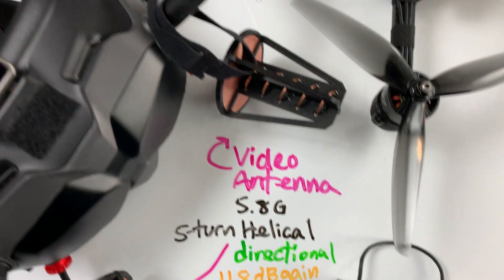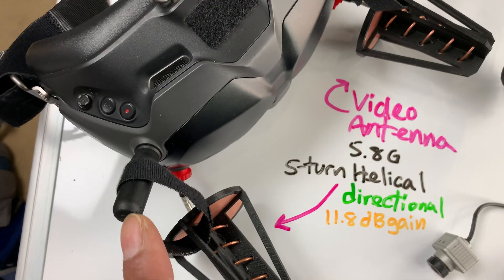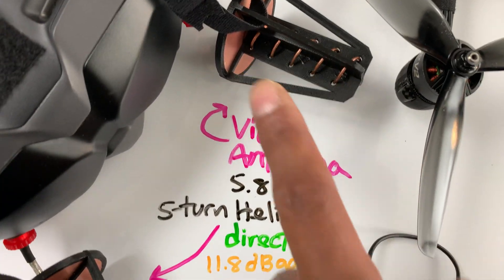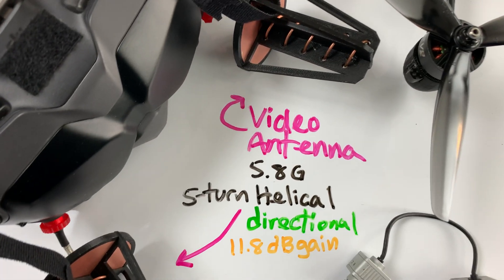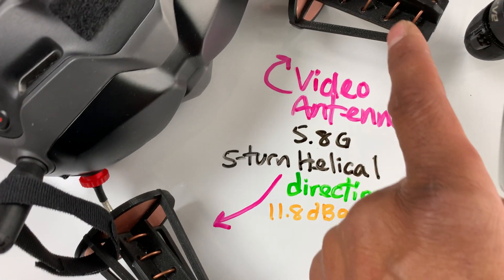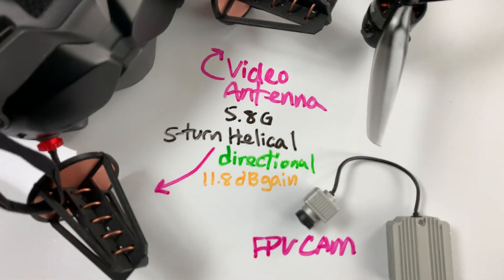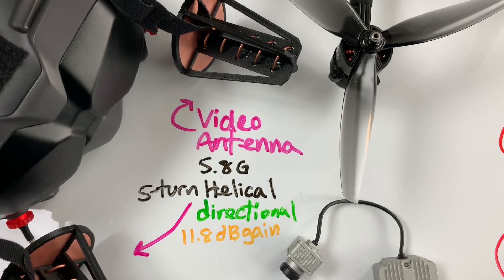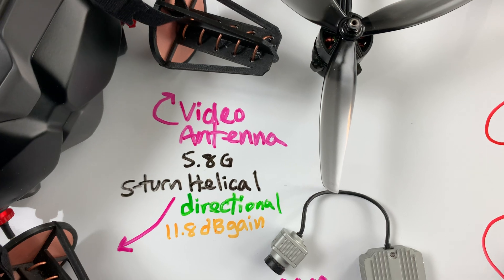And if you turn your head to the side, these goggles have omni-directional antennas as standard on them. But the lower position of them are replaced with directional five-turn helical antennas. You can see the coils. There's five of them there. So what that does is it allows you to look or face in the direction of the drone and get a lot better signal, which means more distance and penetration.